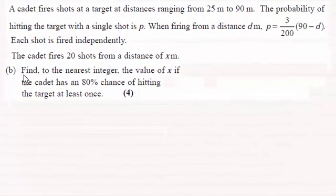Hi there. Now for part B, we're told that the cadet fires 20 shots from a distance of x meters, and we've got to find the nearest integer value of x if the cadet has an 80% chance of hitting the target at least once.